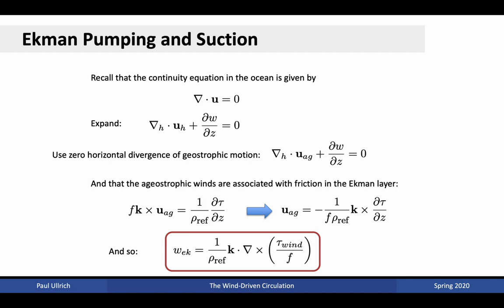From last time we had an equation: f k cross u_ag equals 1 over rho_reference times the vertical derivative of the stress. We can transform this into an equation for u_ag by taking k cross on both sides, giving u_ag equals negative 1 over f rho_reference times k cross the vertical derivative of the stress. We then obtain that the vertical velocity induced by the Ekman layer is given by the curl of the wind stress divided by f times rho_reference.